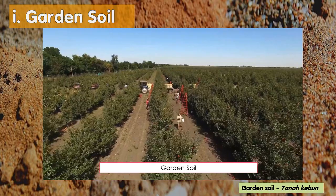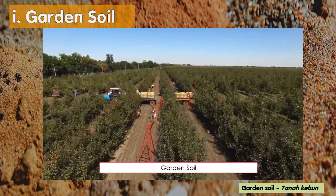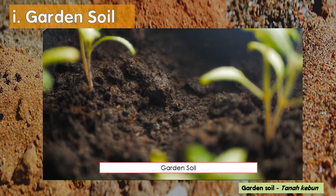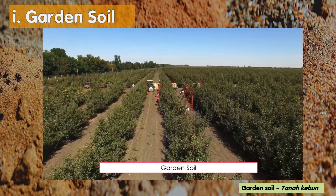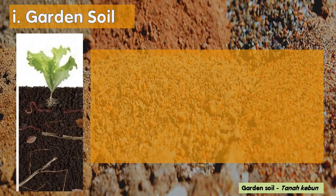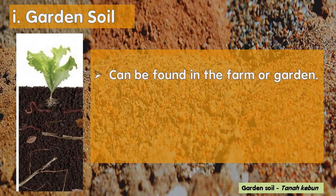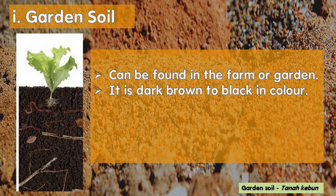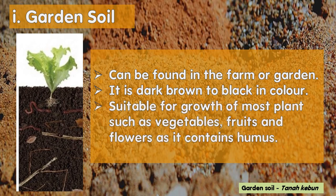The first soil you must know today is garden soil. Garden soil can be found in the farm or garden. It is dark brown to black in colour. Garden soil is suitable for growth of most plants, such as vegetables, fruits, and flowers, as it contains humus.